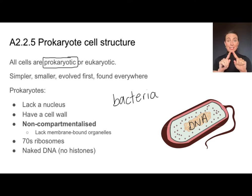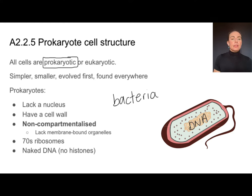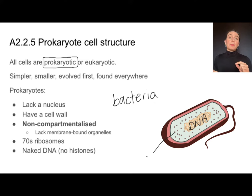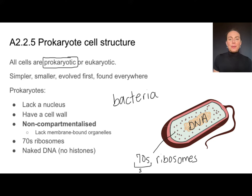All prokaryotes have a cell wall on the outside — made of different things, but they do have a cell wall. They are what we call non-compartmentalized, meaning they lack some of the organelles or cell structures we find in eukaryotic cells. We do see ribosomes — tiny dots that are structures helping to synthesize proteins. In prokaryotes, these are specifically referred to as 70S ribosomes. S is a unit of size, and prokaryotes are uniquely 70S.